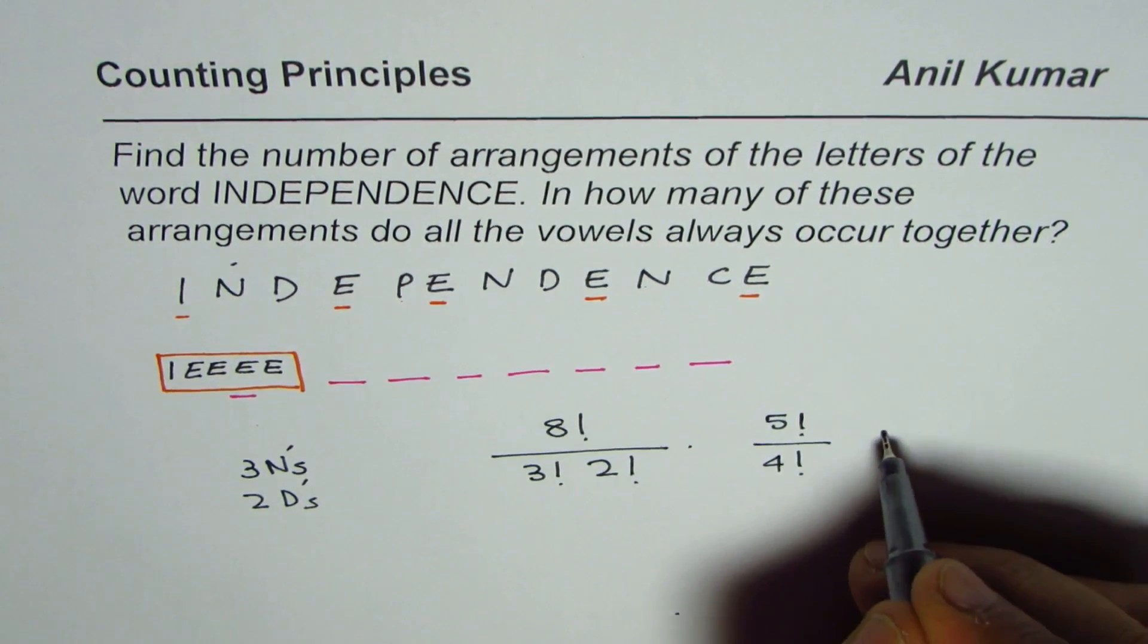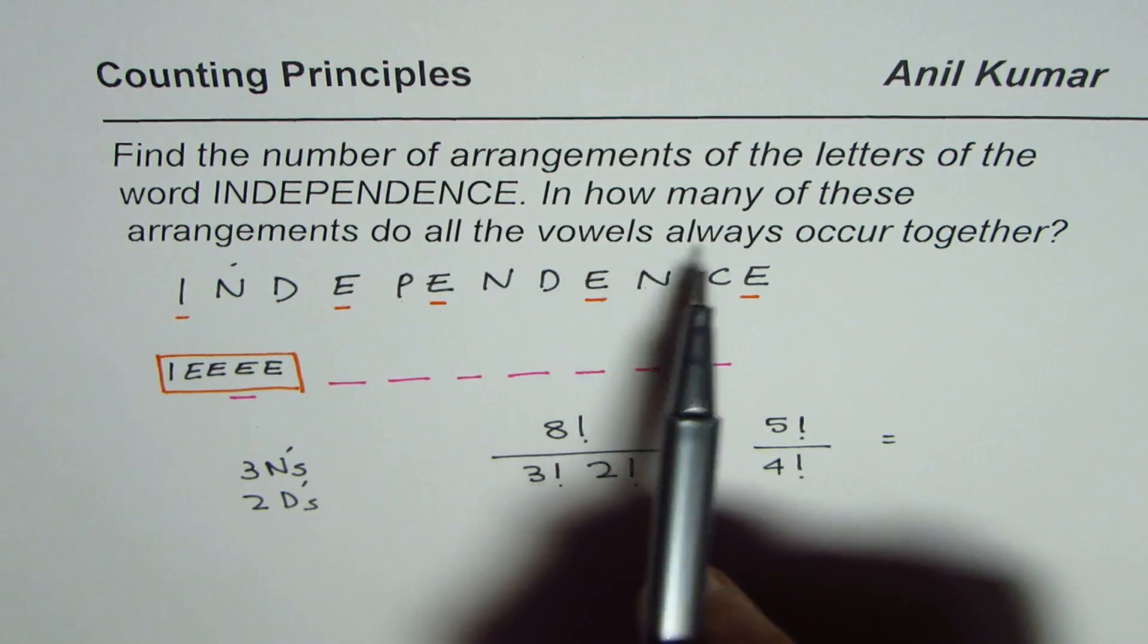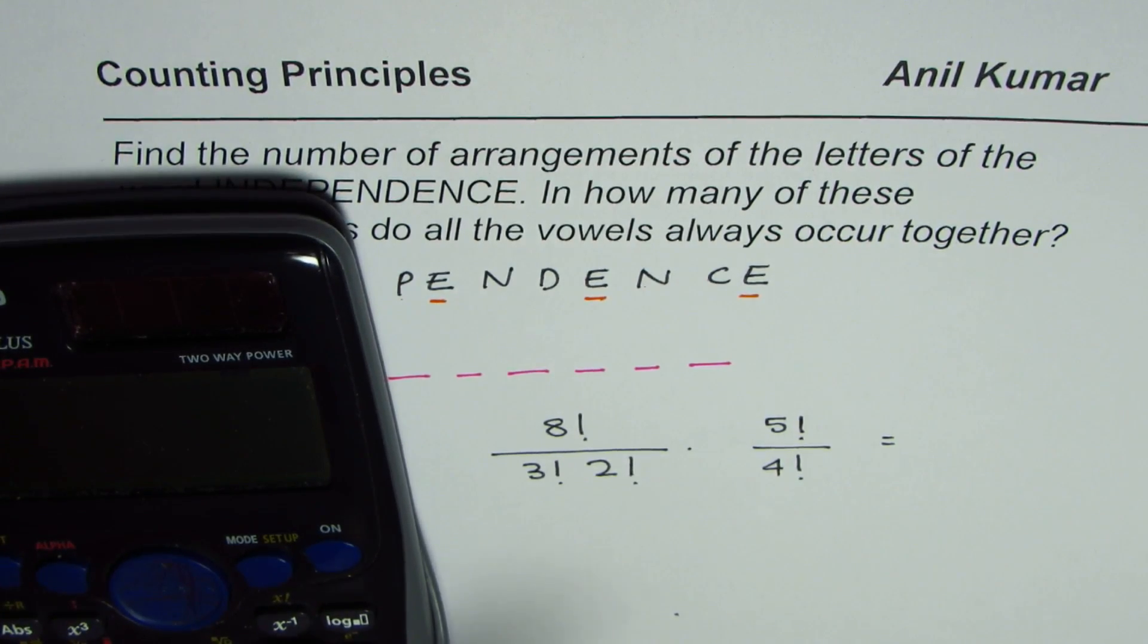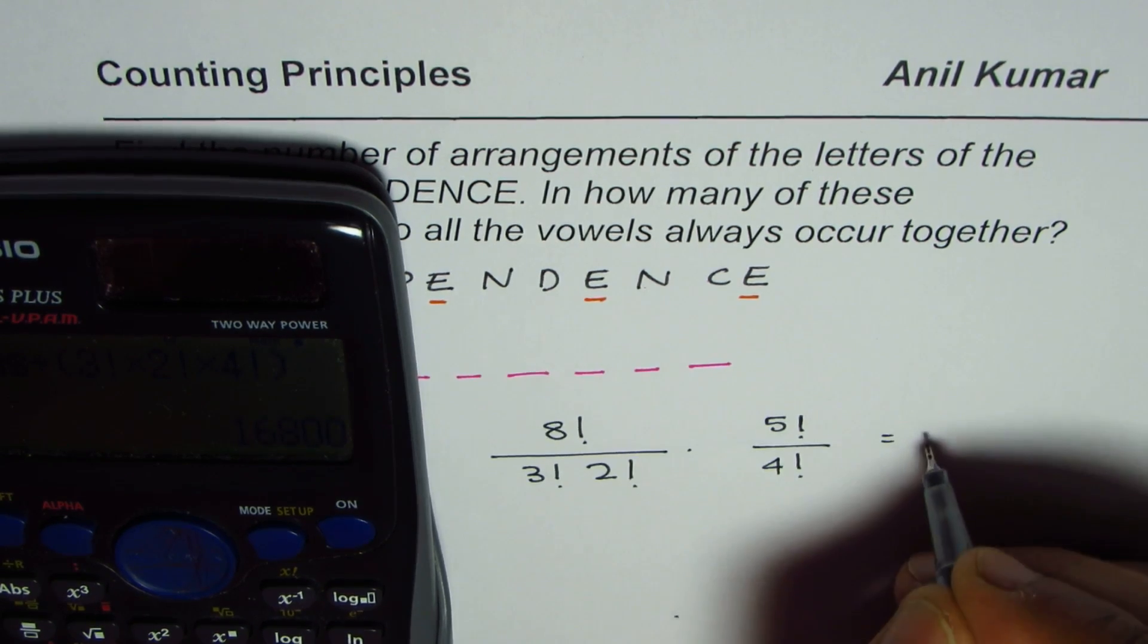So that gives you the total count. So that is in how many ways these arrangements will have all vowels together. So this is what we need to calculate. We can use calculator to find the answer. We have eight factorial times five factorial divided by three factorial times two factorial times four factorial.